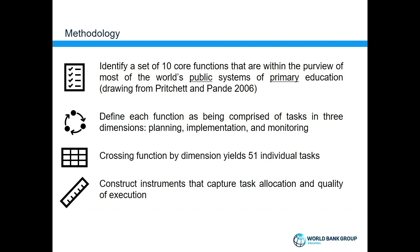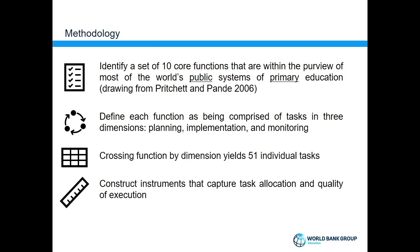We then constructed instruments to capture these measures of task allocation and task execution. A specific example: in the function of school director hiring and assignment, for the planning dimension we asked who is responsible for setting the qualification requirements that new directors must meet. On execution, we asked questions like: the last time a need for a new director was communicated, was that need met? This was multiple choice, ranging from 'the post was never filled' to 'yes, we got the right person within a reasonable amount of time.'